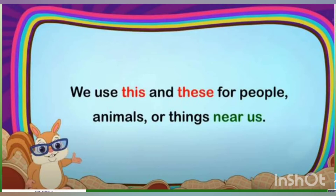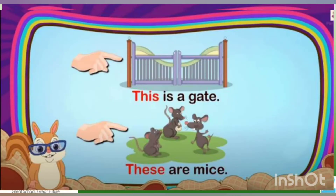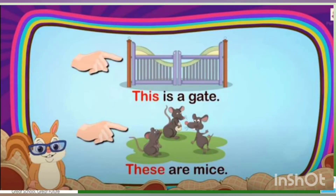We use 'this' and 'these' for people, animals, or things near us. Here, 'This is a gate' — the gate is near to us. 'These are mice' — the mice are near to us. 'Gate' is a singular word so we use 'this'; 'mice' is a plural word so we use 'these.'